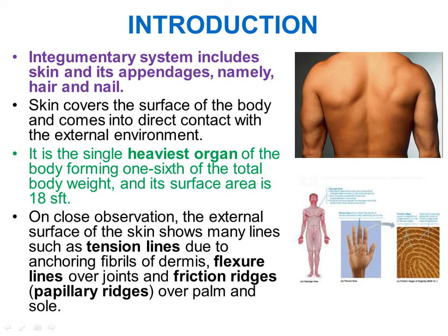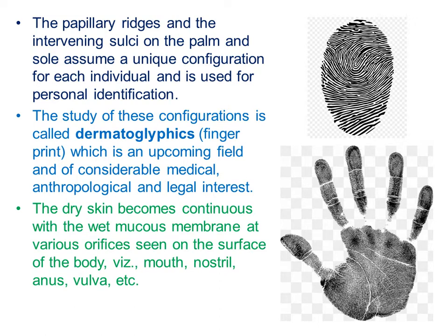Skin has friction ridges or papillary ridges over the palm and sole. These papillary ridges and the intervening sulci form a unique configuration for each individual, used for personal identification. As seen in a fingerprint, the ridges and sulci between them are studied in a field called dermatoglyphics, which has considerable medical and legal interest.